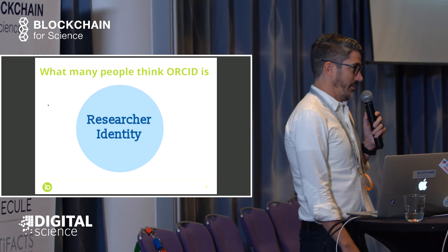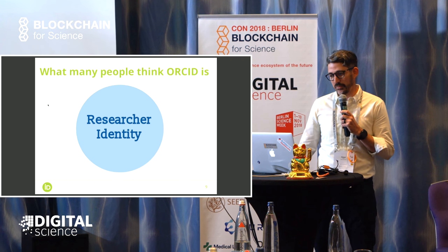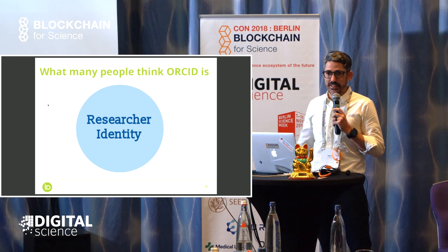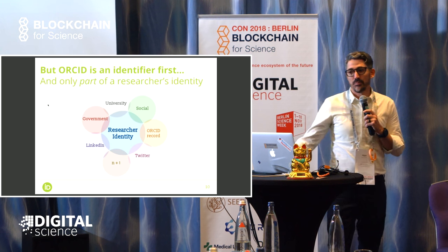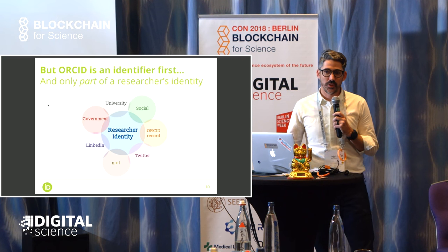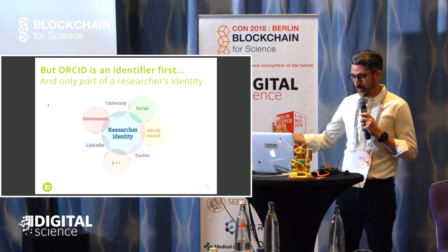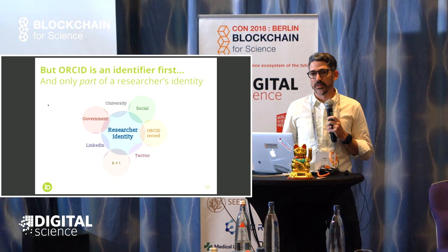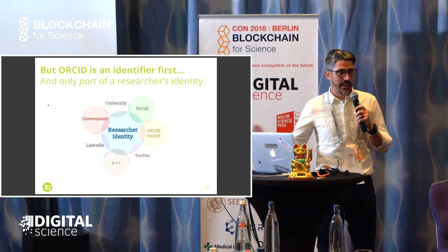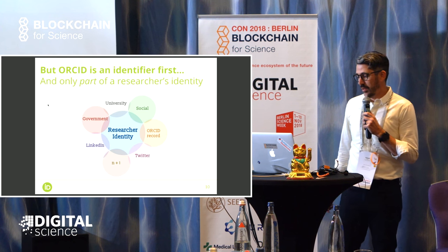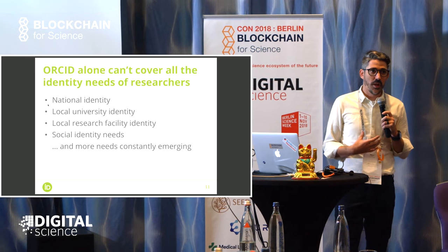Often I talk to people, and a lot of blockchain people too — they want to talk and they think ORCID looks like this diagram. And the reality is ORCID is actually just part of a researcher's identity. You have your university identity, you have a government identity, you have a LinkedIn. Your social identity actually ends up being pretty important when it comes to research. Twitter, ORCID record — every time I look or I dissect the problem, there's one more researcher identity need. Like, I need credentials to access this equipment or access this collection of books. ORCID — we don't see ourselves as solving that problem alone. It's a community effort.